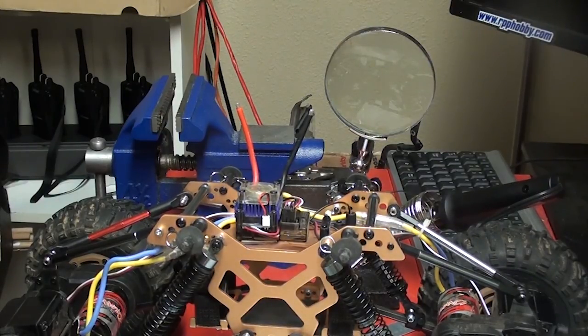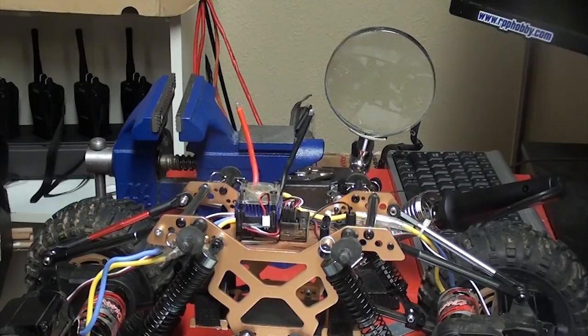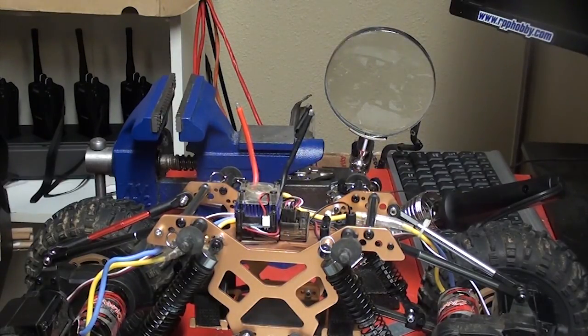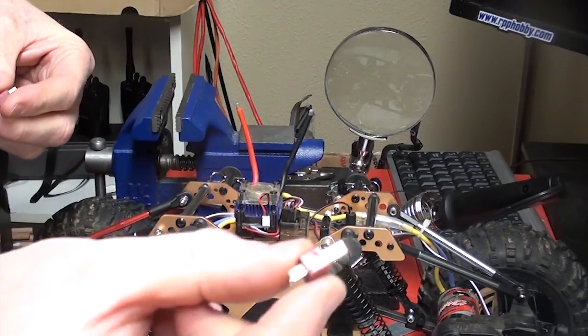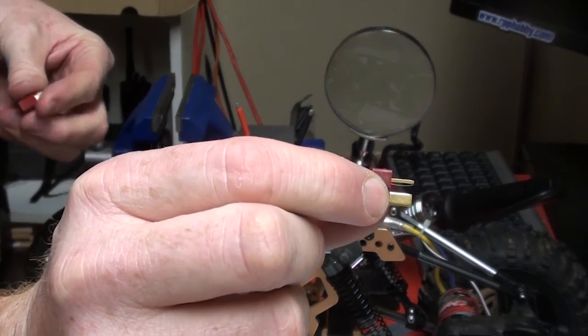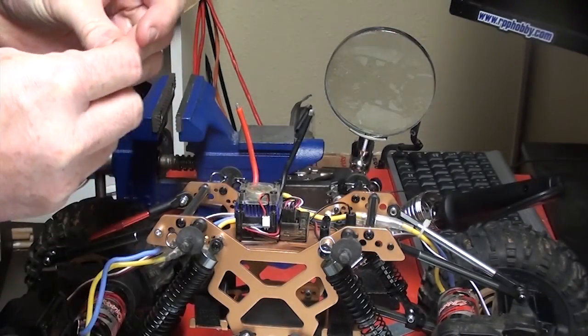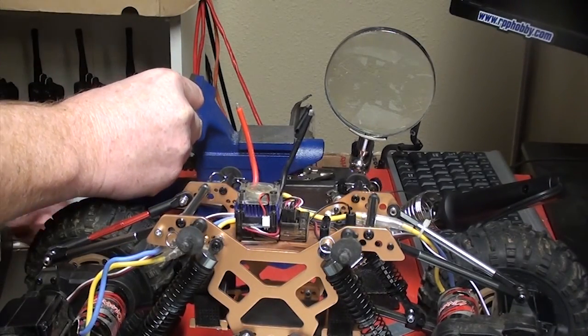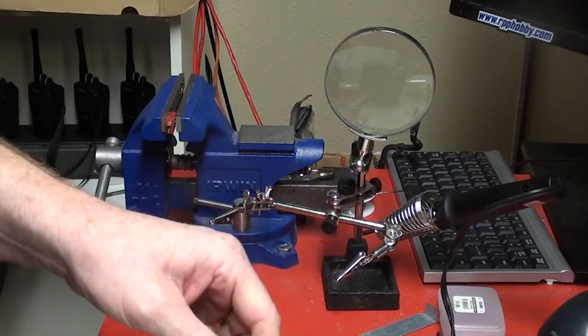I tend to buy my Deans plugs in bulk from Palm's Hobbies. And again, put the connector. It's going to end up on the ESC or on the ESC into its mate. So I can put that in the device. I'm going to tin that thing up real quick.